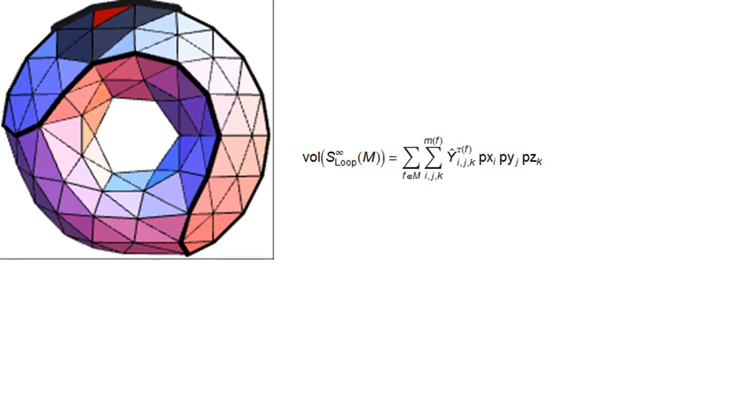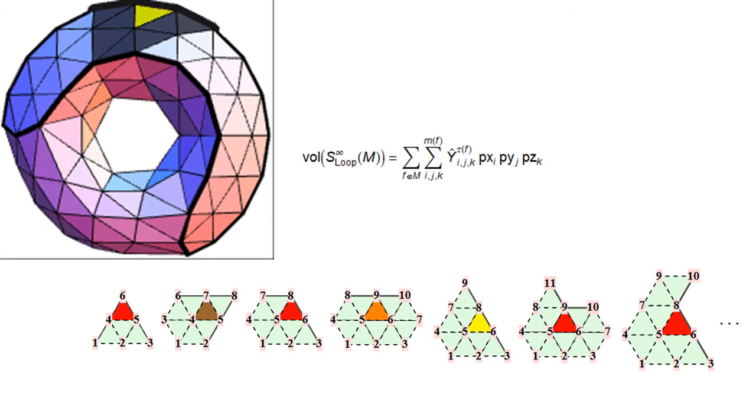The volume formula for loop subdivision surfaces with sharp creases is of the same prototype. And the trilinear forms that we mentioned earlier still apply for triangles that are not adjacent to the crease. However, if a triangle shares one or more vertices with a crease, the new crease subdivision rules affect the surface associated to the triangle and different trilinear forms apply.